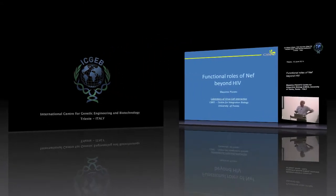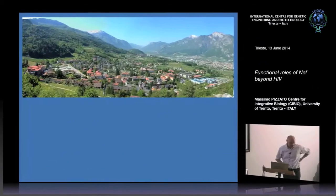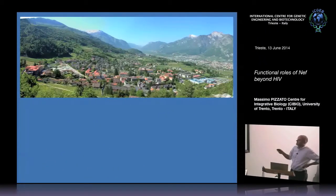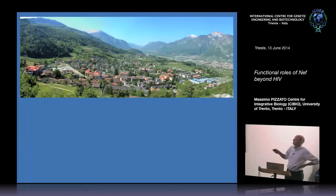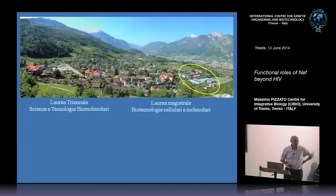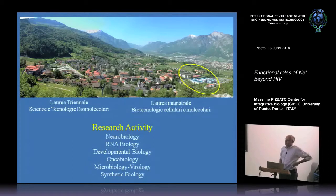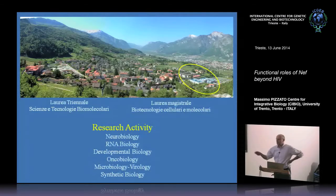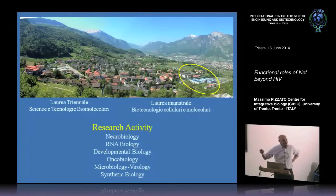Just a few words first to say that we are here — this is Trento, a suburb called Povo, where our facilities are. We have a bachelor and master degree based on biotechnology, and research activity with groups that study neurobiology, RNA biology, etc. So if you want to come for a postdoc or whatever, take Trento into consideration — it's not too bad.